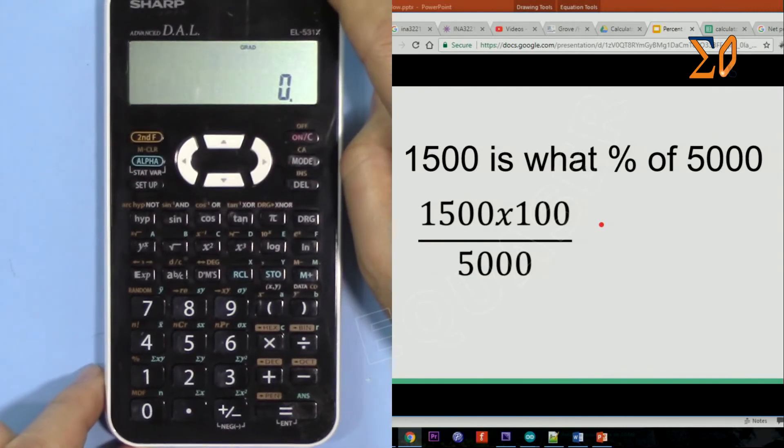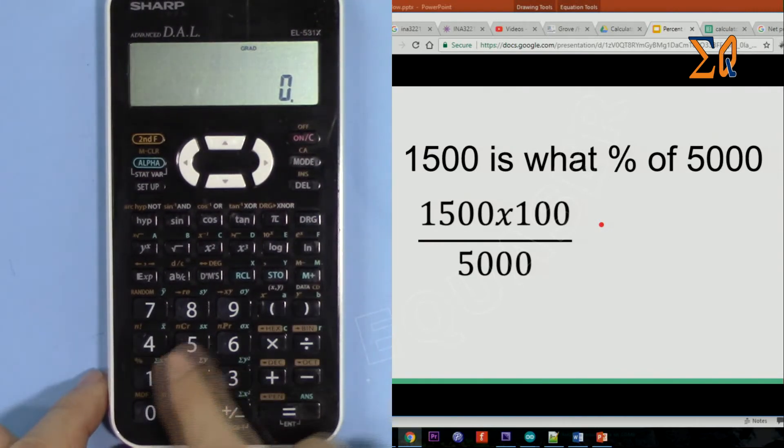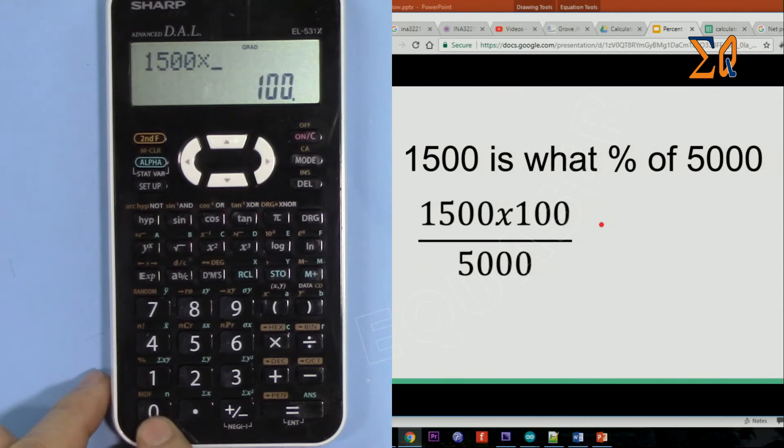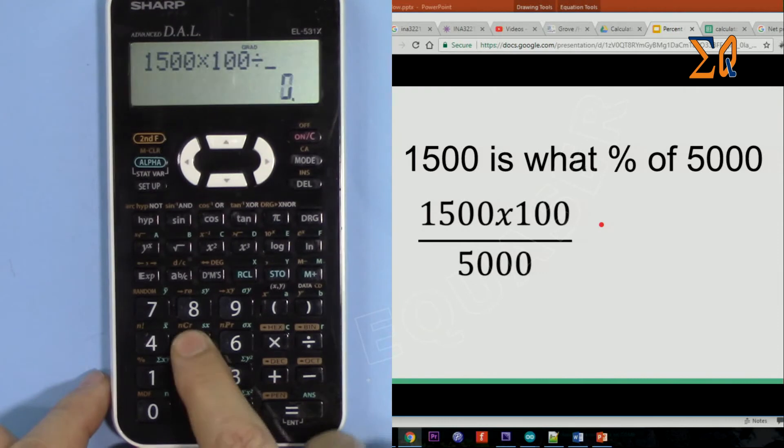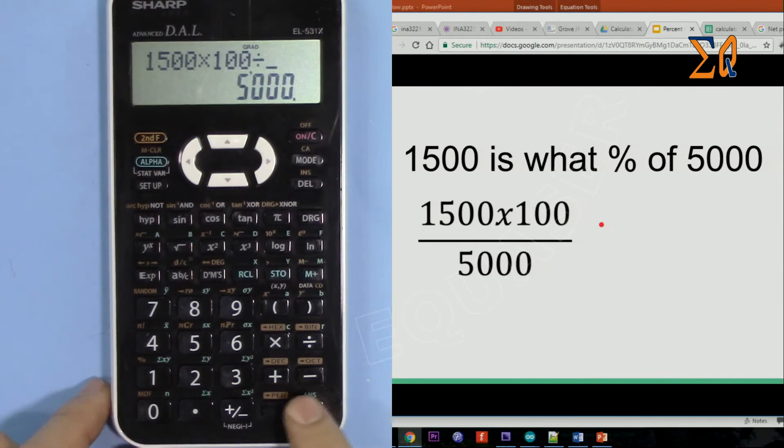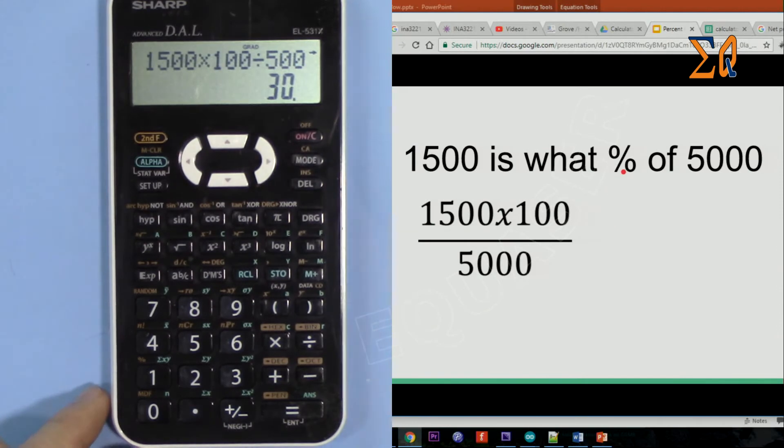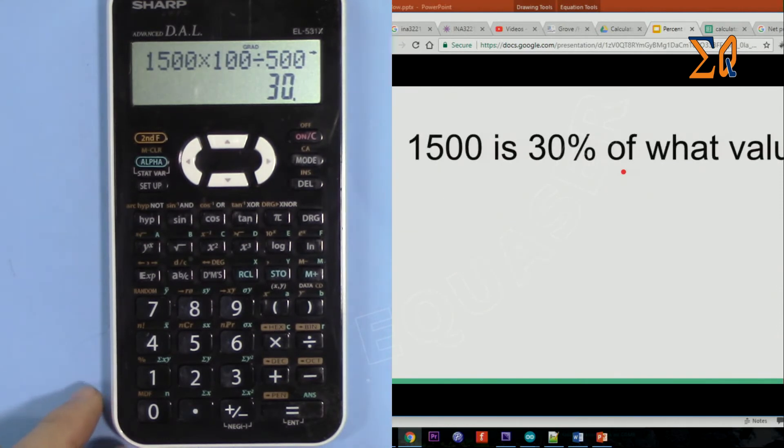So 1500 times 100 divided by 5000. You don't need any brackets here. The answer is 30 because we know it's 30 percent. Now the third way would be 1500 is 30 percent of what value.